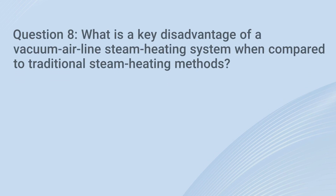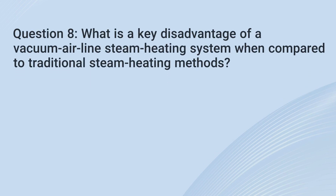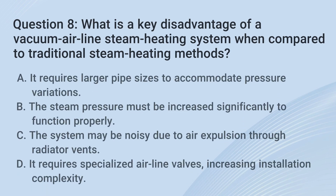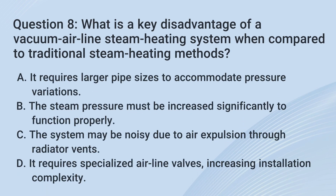Question 8. What is a key disadvantage of a vacuum-airline steam heating system when compared to traditional steam heating methods? A. It requires larger pipe sizes to accommodate pressure variations. B. The steam pressure must be increased significantly to function properly. C. The system may be noisy due to air expulsion through radiator vents. D. It requires specialized airline valves, increasing installation complexity.